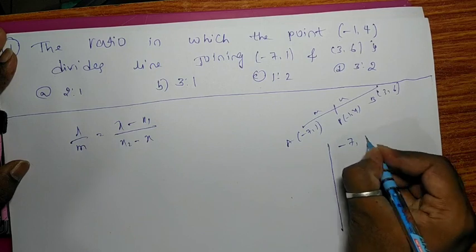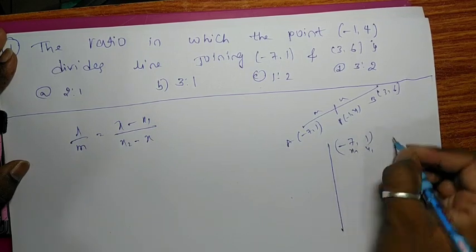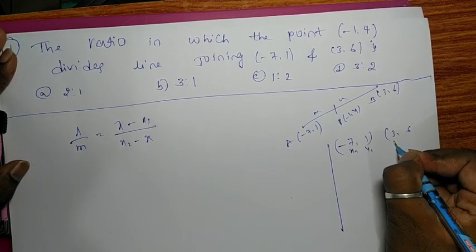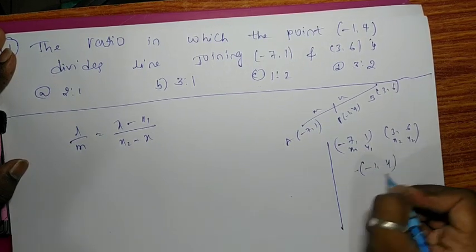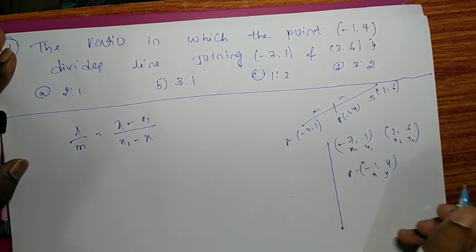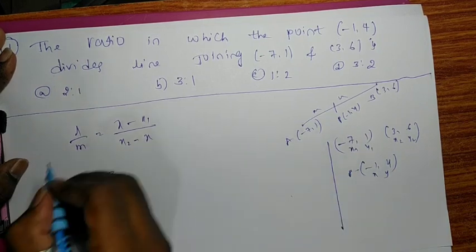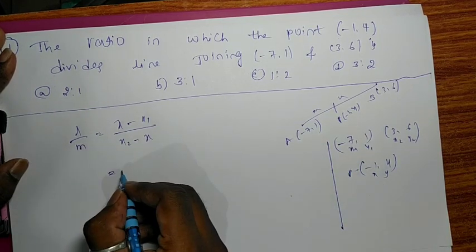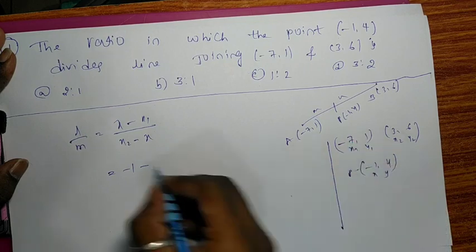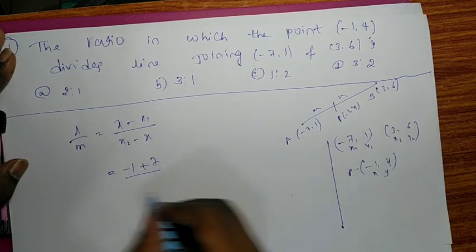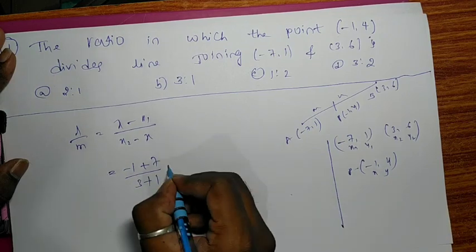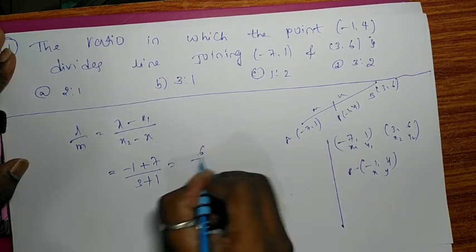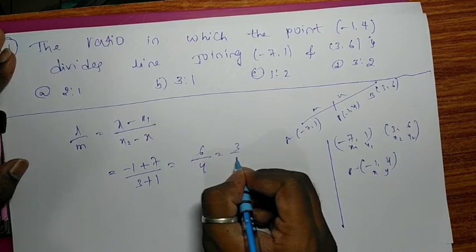The point is (-7,1). We have x1 and y1. We have (3,6). We have x2 and y2. We have (-1,4). Now, substitute this formula. X1 is -1. Minus of x1 is -1, minus of x is -2 to -1 plus 7. x2 is -3. Minus of x1 is -1 plus 1. -1 plus 7 is 6 divided by 4. Then, 3 divided by 2.